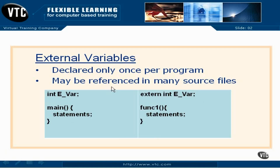That's an external variable. We're about to move on into scope — how long a variable hangs around, how it gets created, and where it gets put in memory. I want to make sure you understand the concept of an external. Some languages call them globals. The key is: one time the external variable gets declared without the word extern — that's the definition. Every other time it's referenced, you use the word extern. Big difference. Let's go on to the next video.